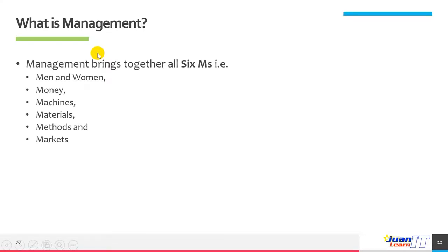Management brings together all the six M's. These are: men and women, money, machines, materials, methods, and market. They use these resources for achieving the objectives of the organization, such as maximum sales and profits, business expansion, and — in the case of a university or school — providing quality education to students. That is part of management.